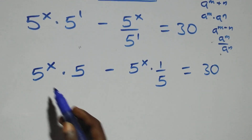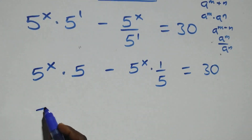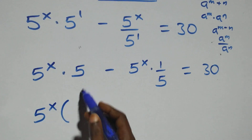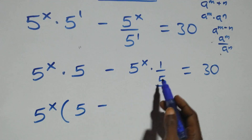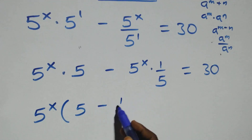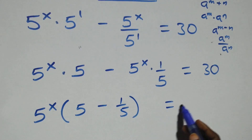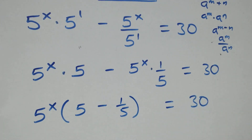Then the next step: we take 5 raised to power x as a common factor. So we have 5 raised to power x into brackets: 5 minus 1 over 5, and this equals to 30.